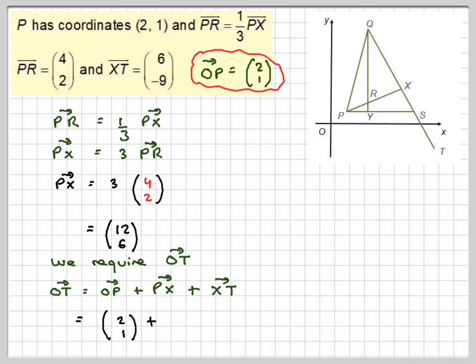So we're going to do 2, 1 plus PX, which is 12, 6, plus XT, which is given in the question, 6, minus 9.